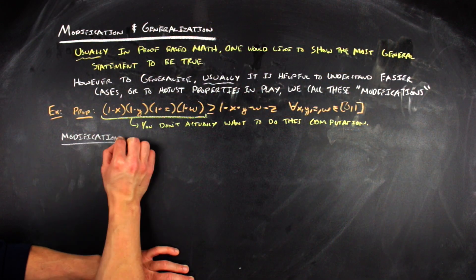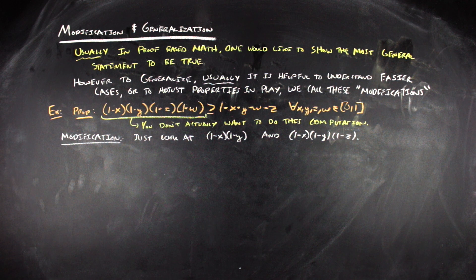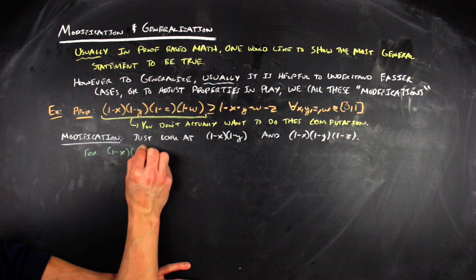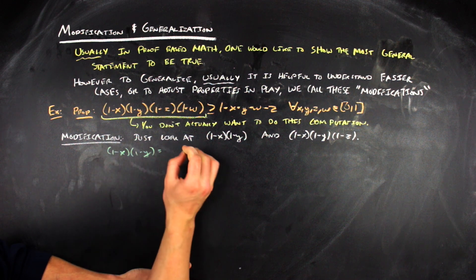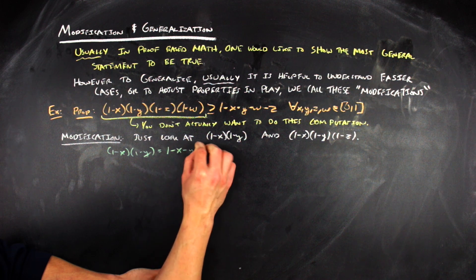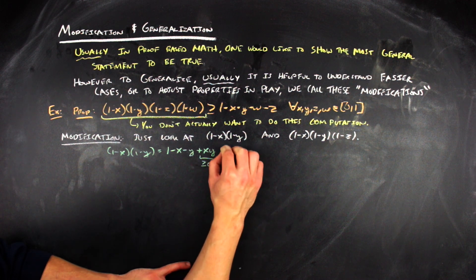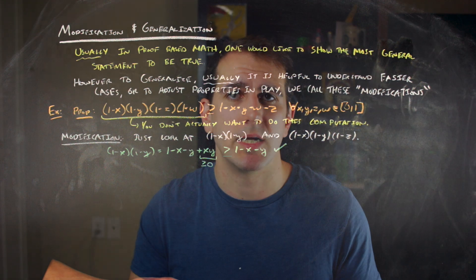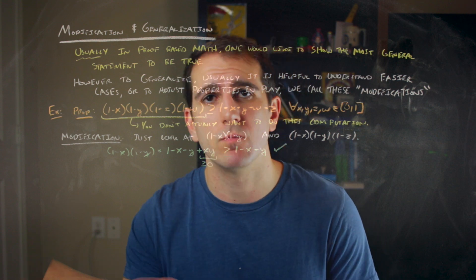What if we look at the problem where we just have an x and a y, and then when we just have an x and a y and a z? Well, when we look at just having an x and a y in that modification of the problem, we can expand that product very quickly using FOIL, because in this particular case it's appropriate to use that word. You get 1 minus x minus y plus xy. And because x and y were between 0 and 1, x times y is greater than or equal to 0. So 1 minus x minus y plus xy is going to be greater than or equal to 1 minus x minus y. The modified problem, where we just had two terms instead of four terms, holds.